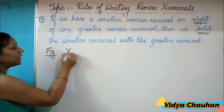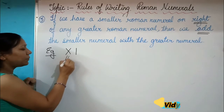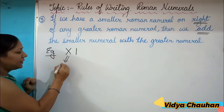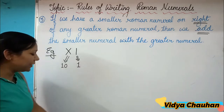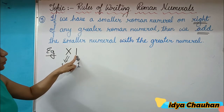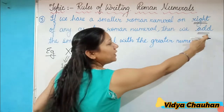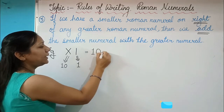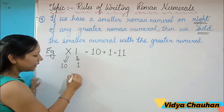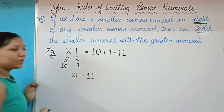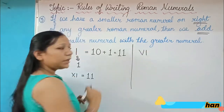Suppose the Roman numeral given to you is XI. X represents 10 and I represents 1. It is very clear that there is a smaller numeral on the right side of the bigger numeral. According to the rule, we need to add the digits: 10 plus 1 equals 11. This means the Roman numeral XI represents the digit 11.